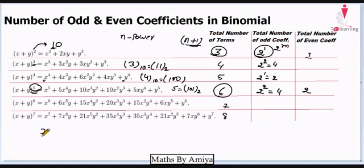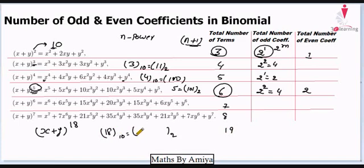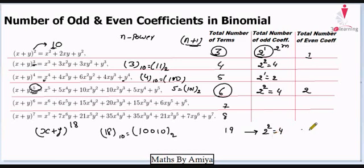So the even coefficients are 6 minus 4, which is 2. If we have to find the total number of terms in (x+y)^18, it would be 19. Converting 18 to base 2: 18 = 16 + 2, which is 10010 in binary. The total number of 1's is 2, so total odd coefficients is 2² = 4, and total even coefficients is 19 minus 4, which is 15.